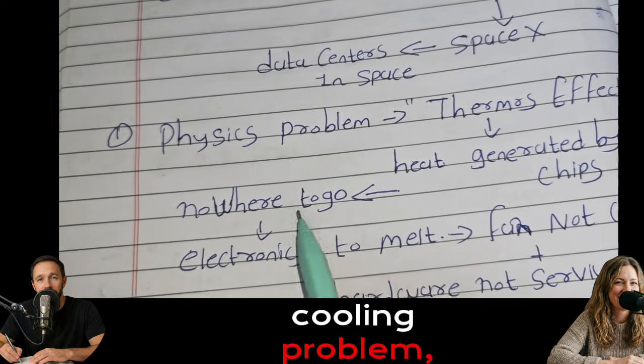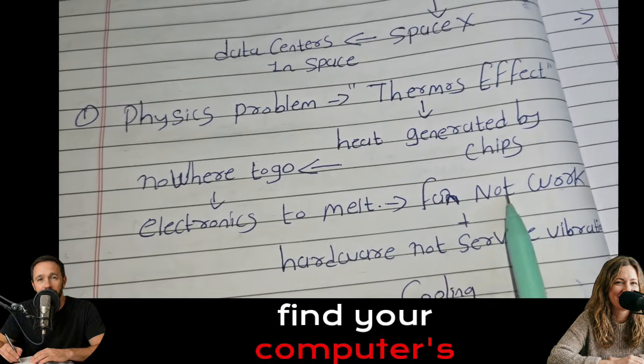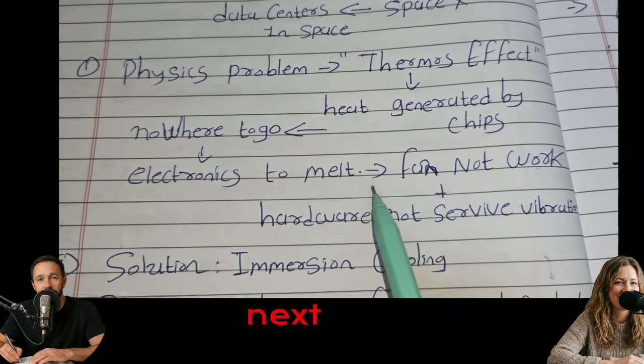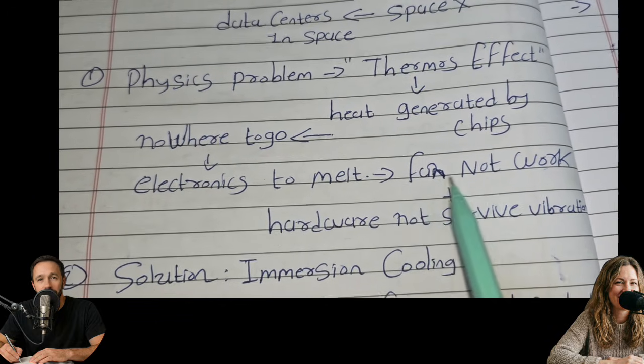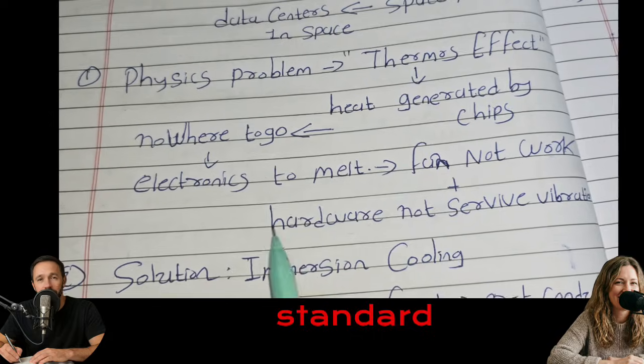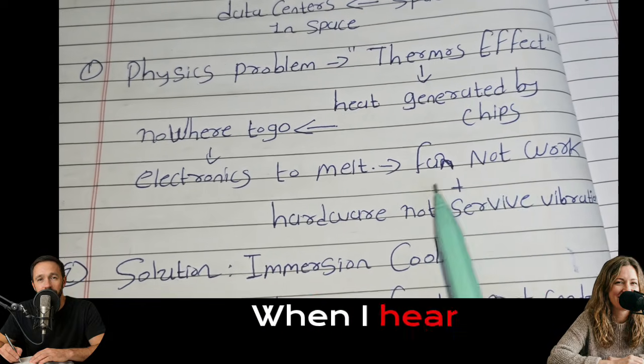So even if you solve the cooling problem, you might get to orbit and find your computer's been shaken into a bag of broken parts. SpaceX wants to build the next layer of the internet in space. But standard tech can't survive the trip. And if it does, it overheats immediately because standard cooling fails in a vacuum.